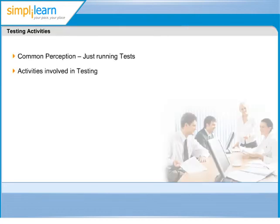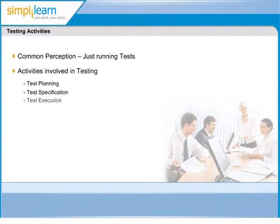Testing is commonly perceived to be only about test execution, so one will not be surprised to hear when a tester says, 'I am doing testing other than test execution.' Typical activities that need to be carried out in order to achieve test objectives would be test planning, defining test specifications, test execution, test recording, and test reporting. Let us see a little more about each of these activities.